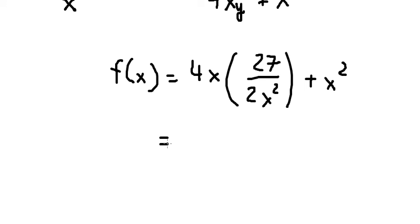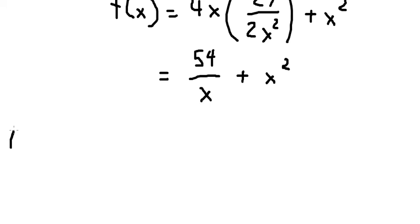Now we can simplify and we have 54 over x plus x squared. Now we need to take the derivative of f with respect to x. We have negative 54 over x squared, and this one we have 2x.